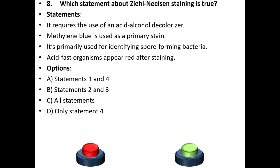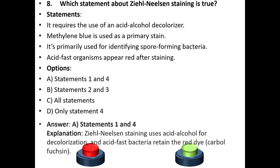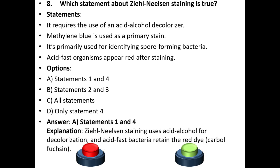Which among the following is correct? The answer is A: statements 1 and 4. Explanation: Ziehl-Neelsen staining uses acid-alcohol for decolorization, and acid-fast bacteria retain the red dye, carbol fuchsin.